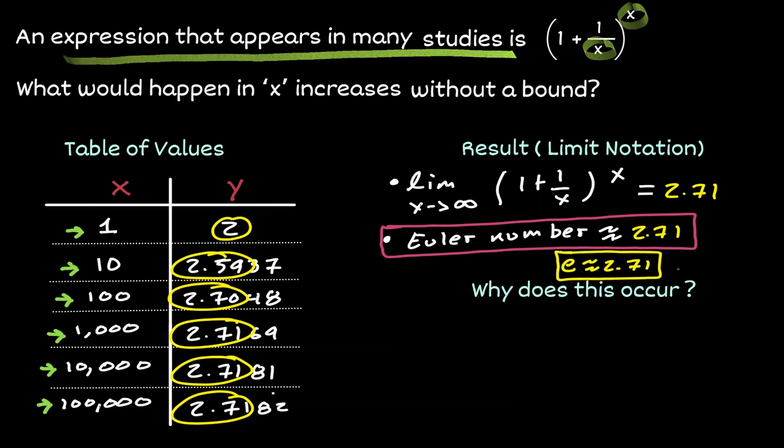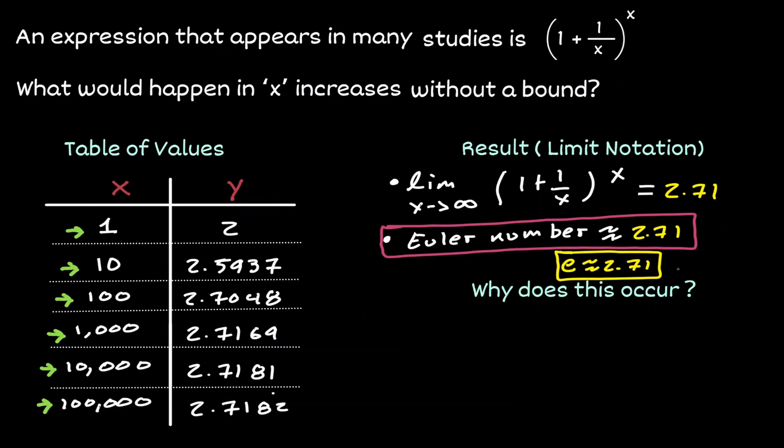So anytime we see the character of E, we know that we are referring to the Euler number, which has an approximation of 2.71. So now let's think about why does this behavior occur? Let me rewrite the expression that we started this conversation with.